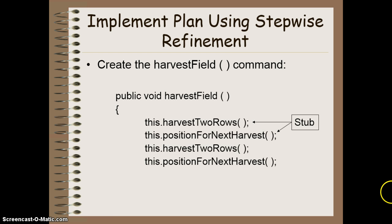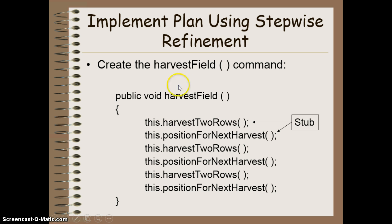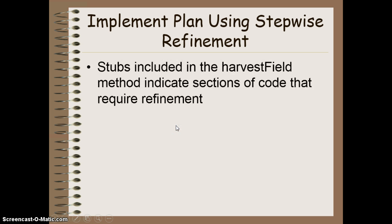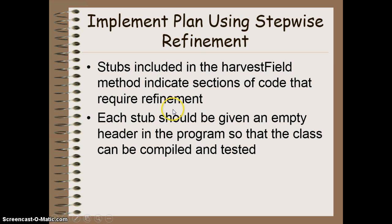To implement this, I'd make my harvest field method and put all the required methods inside it: harvest two rows, get ready for the next one, harvest two rows, get ready for the next one, and so on. You'll notice these are methods that don't exist yet — we call this a stub. It's essentially a placeholder for a method we still need to create, with no code in it yet. A stub indicates a section of code that requires more refinement. We should give it an empty header so the program can still be compiled and tested, even though the code isn't there yet to actually do its job.